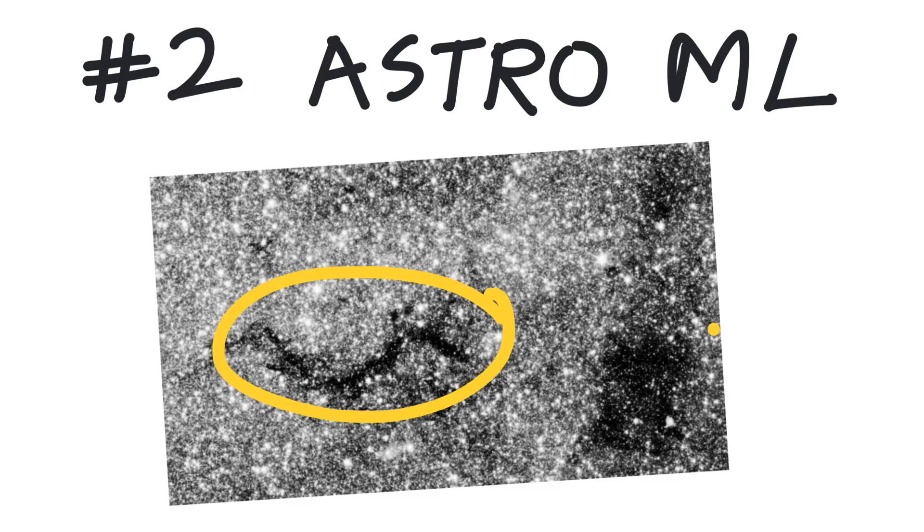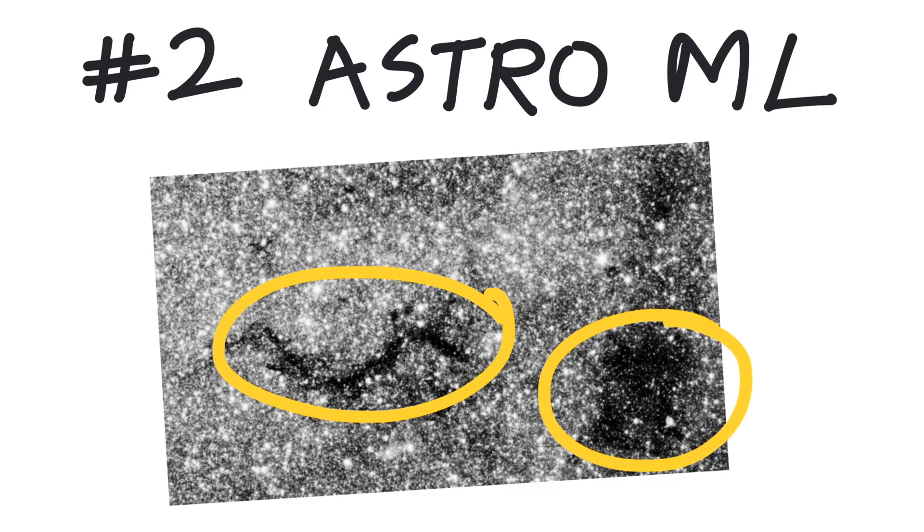Number two: AstroML. In this image, there are two infrared dark clouds. Naively, you would say that there are three, but a convolutional neural network was able to pick up on more subtle details and correctly identified the two clouds.